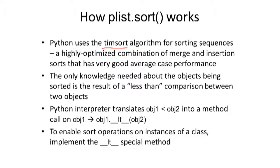Python uses a particular algorithm called TimSort for sorting sequences. We've seen some other sorting algorithms. This turns out to be a very highly optimized combination of a merge sort and an insertion sort that has really good average case behavior. If you want to look it up, it's worth checking it out. It's a neat algorithm. But basically it's going to sort things very efficiently. What Python needs to know about the objects being sorted is what's the result of a less than comparison between two objects. Well, that's up to us to define.